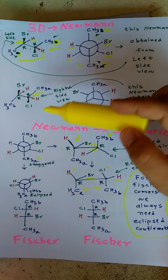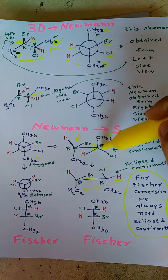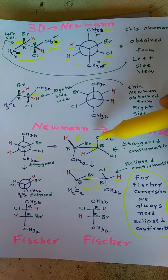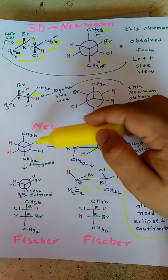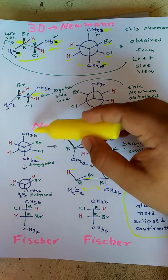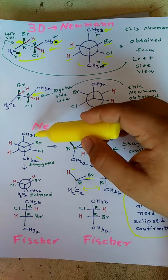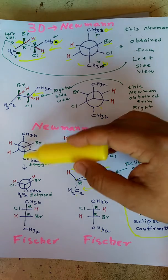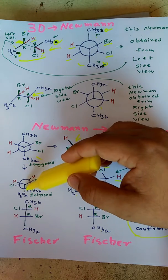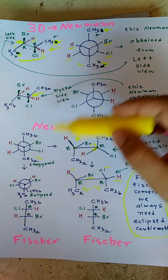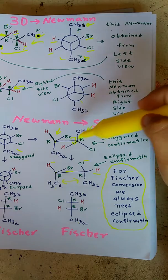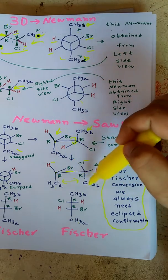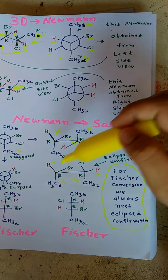Now we have covered 3D to Newman conversion. Next, we will do Newman to Sawhorse, Newman to Fischer, or Sawhorse to Fischer. See this staggered conformation — when this methyl and methyl is 180 degrees dihedral angle, we call it staggered conformation. When methyl and methyl is 0 degrees dihedral angle, we call it eclipsed conformation. In the Sawhorse projection, methyl and methyl at 180 degrees is staggered and at 0 degrees is eclipsed.